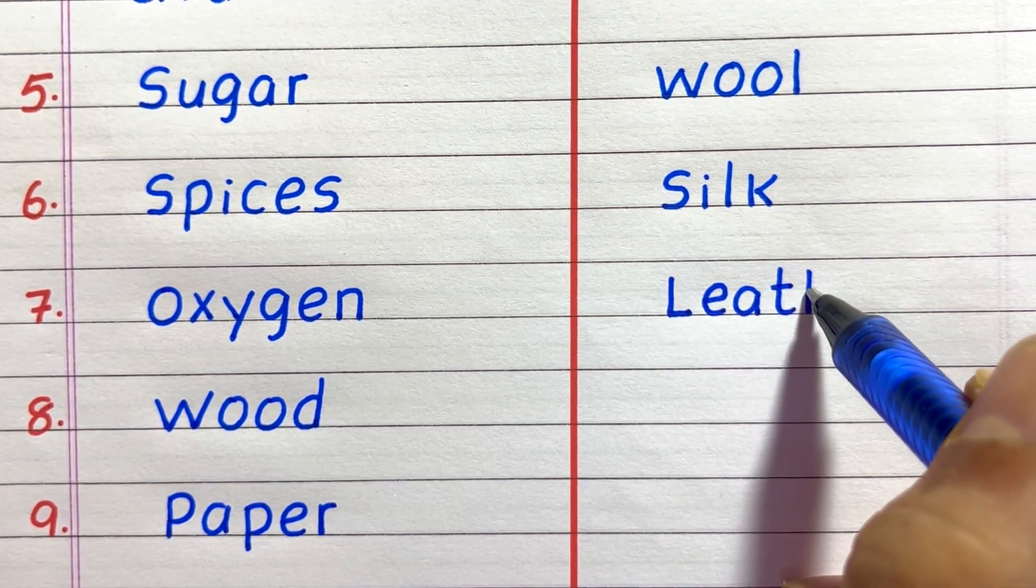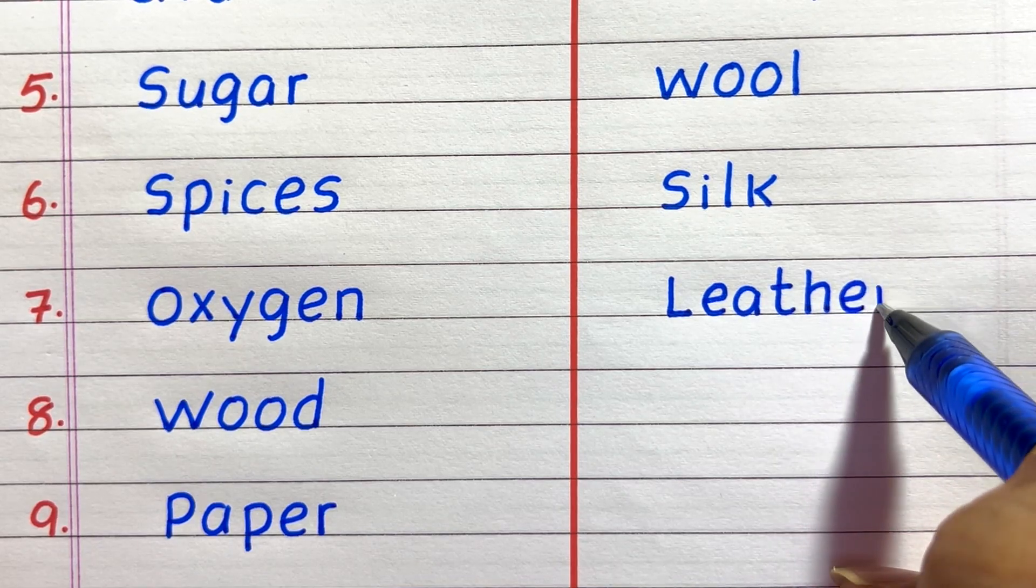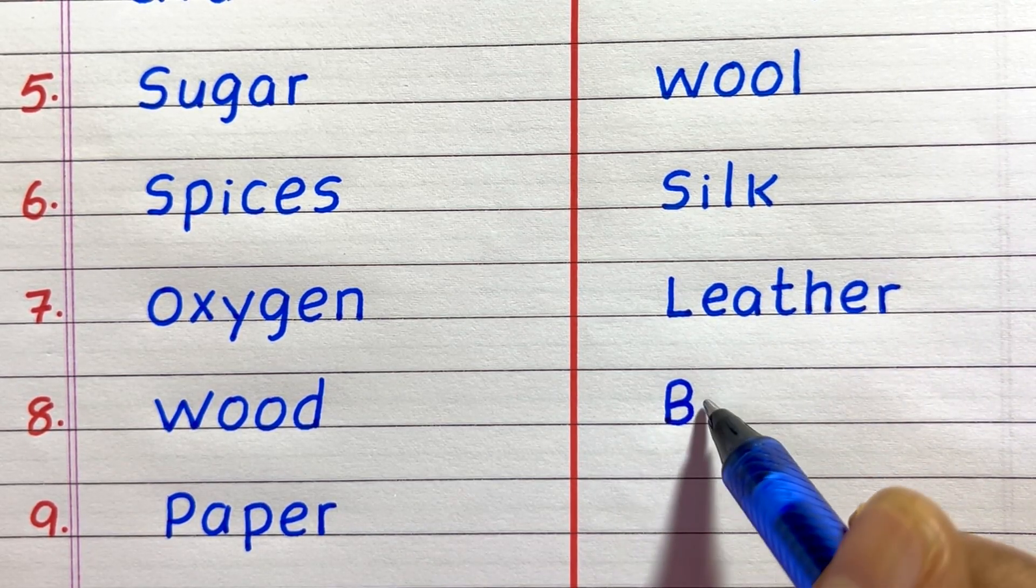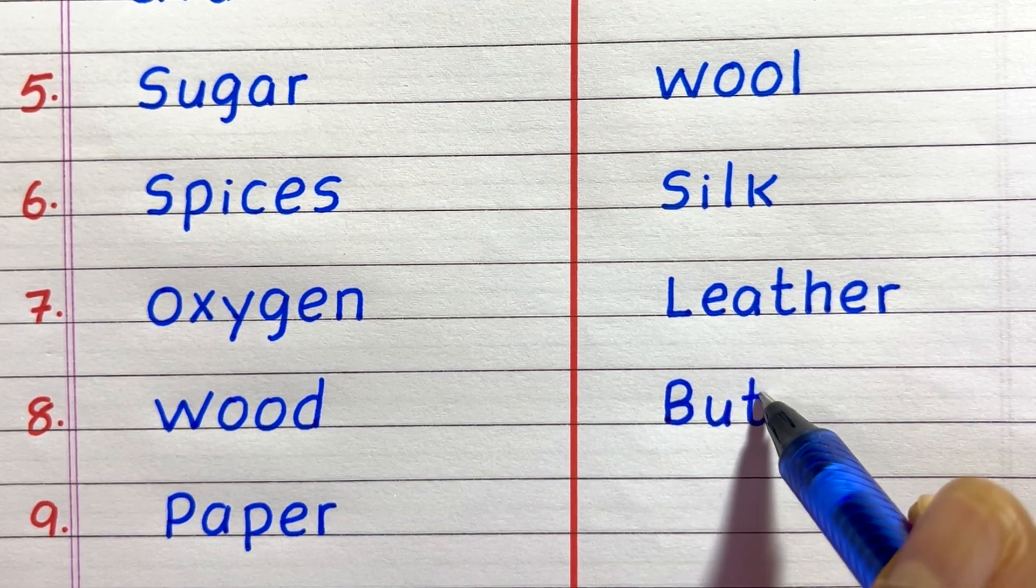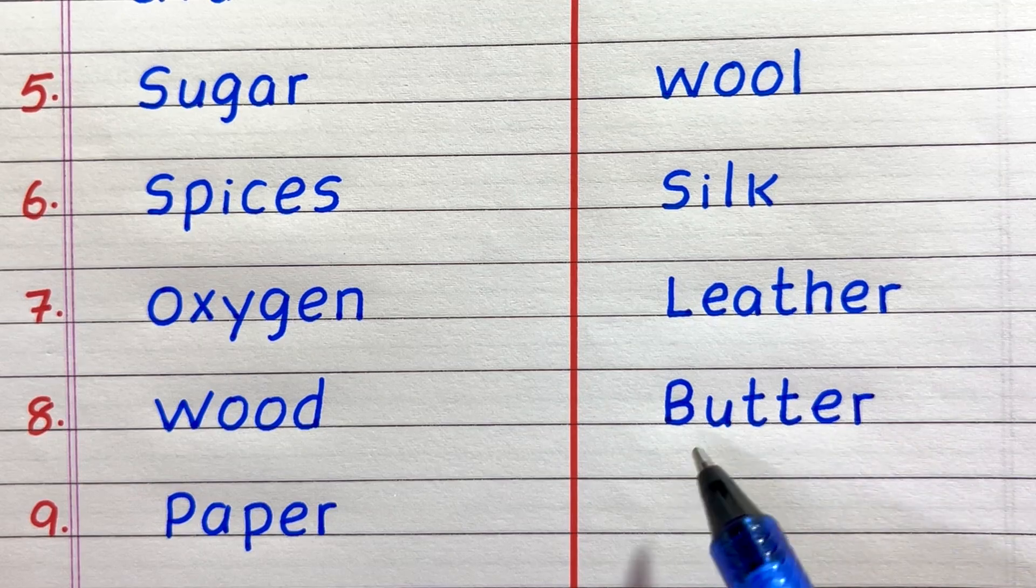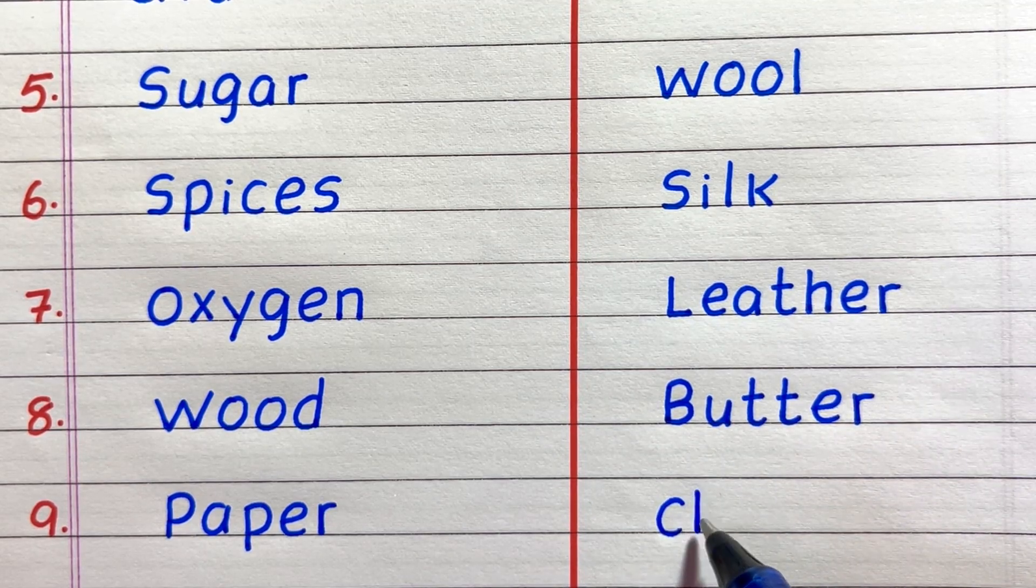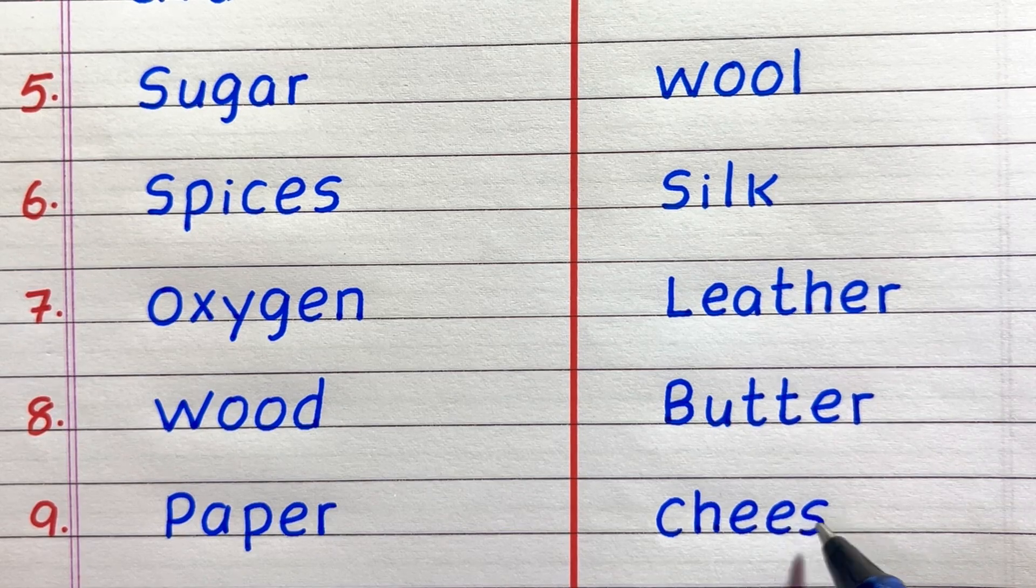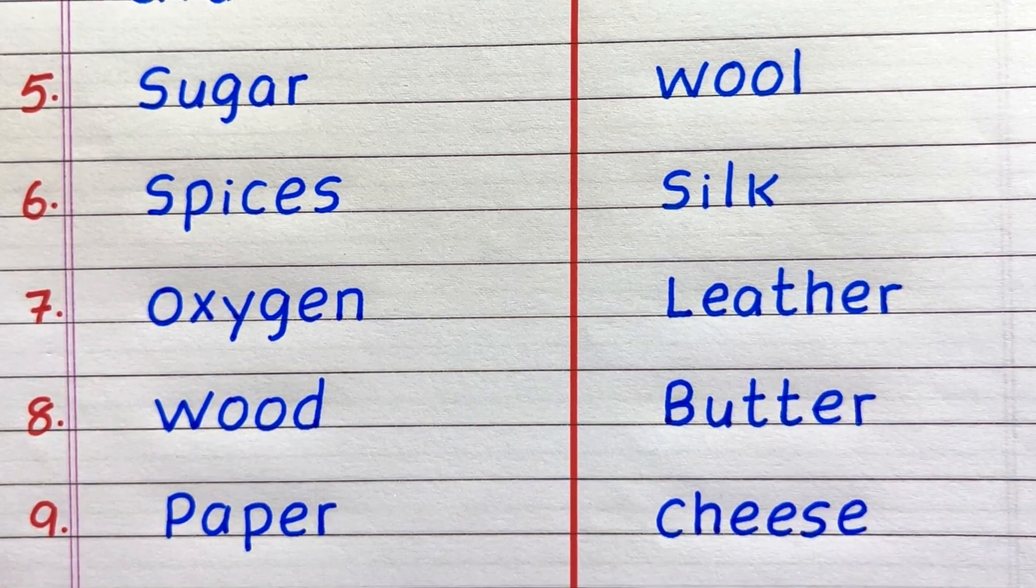Seventh thing that we get from animals is leather. Eighth, butter. Ninth, cheese.